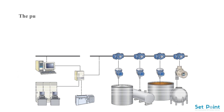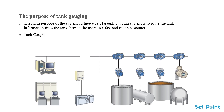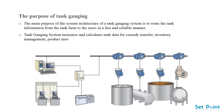The main purpose of the system architecture of a tank gauging system is to route tank information from the tank farm to the users in a fast and reliable manner. Tank gauging systems measure and calculate tank data for custody transfer, inventory management, product movement, mass balance, loss control, leak detection, and overfill prevention.